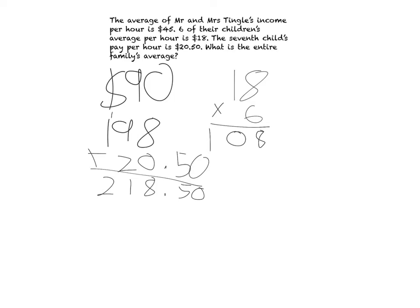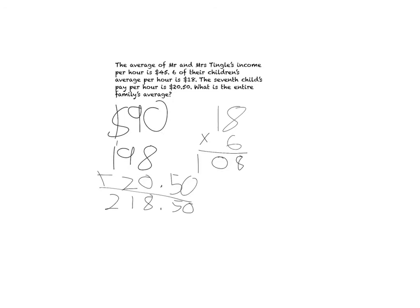So now I would divide all of this by the number of people there are, or numbers there are. But in this case, it's people. So there's Mr. and Mrs. Tingle, which is two, and then there are children, which is seven. So seven plus two is nine.